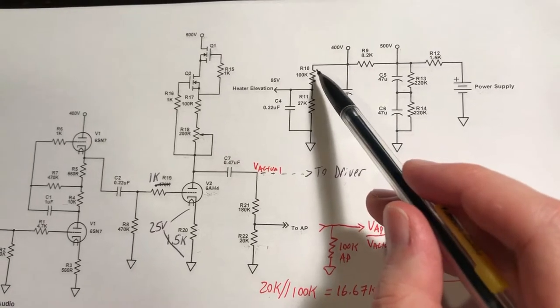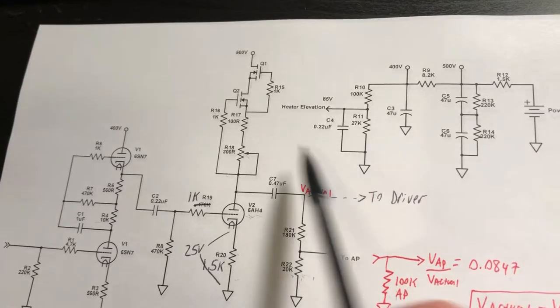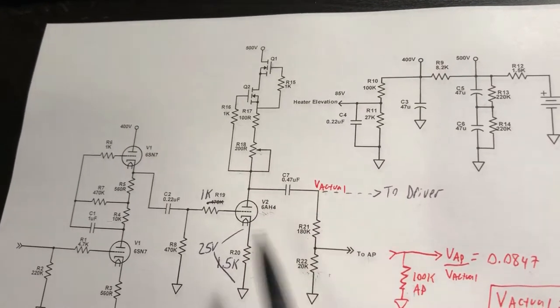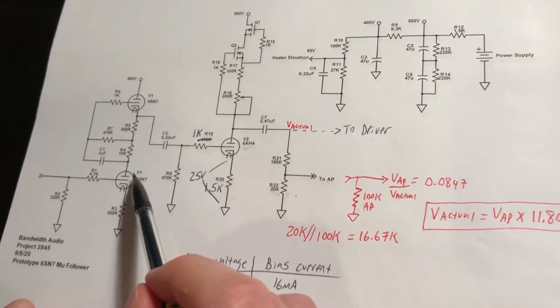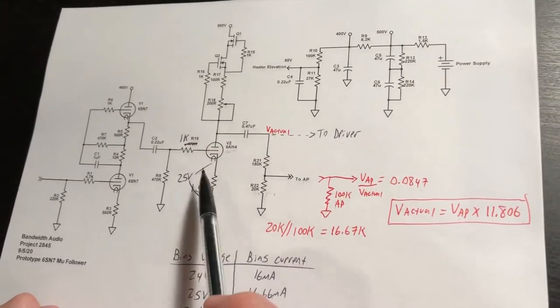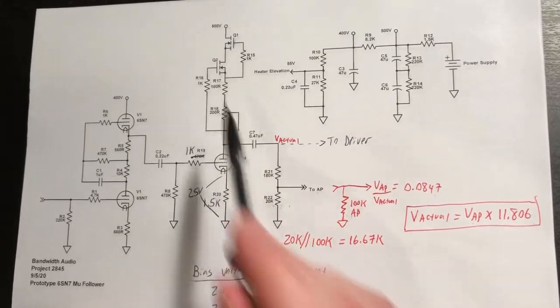Off of that 400V supply, there's a voltage divider and a filtering capacitor which forms our heater elevation. Now the 6AH4 and our 6SN7 mu follower can be driven off the same heater supply and therefore can share a common heater elevation.